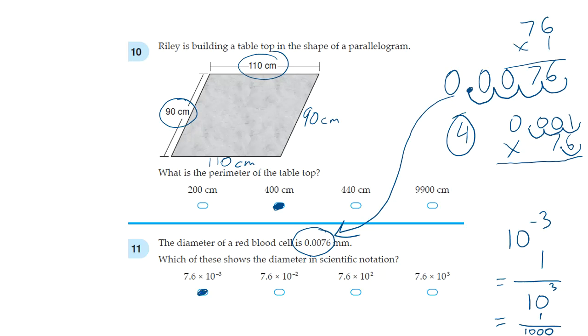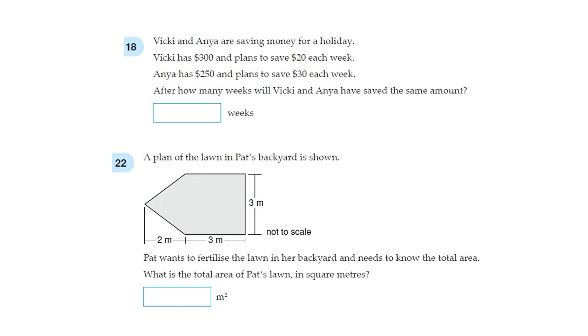The other ones you can also test out, but there's no need to because we got it the first time already. So question 18, Vicky and Anya are saving money for a holiday. Vicky has $300 and plans to save $20 each week. Anya has $250 and plans to save $30 each week.